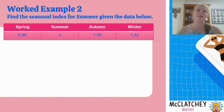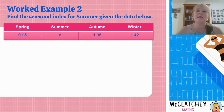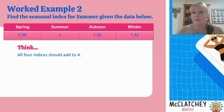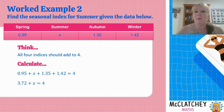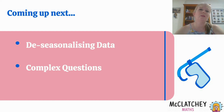Let's look at worked example number two. We're given four seasonal indices and one is missing — we need to find the seasonal index for summer. Remember that our four indices should add to four. So we'll call the summer season x and add all the indices together: the three known indices sum to 3.72, so 3.72 plus x equals 4. Subtracting 3.72 from both sides, we find the seasonal index for summer is 0.26. It's always a good idea to write a statement at the end of your answer.